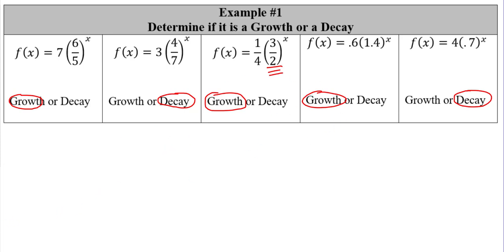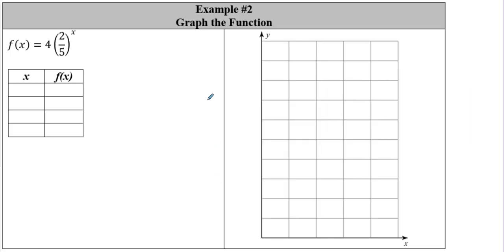Remember, the definition of an exponential function means we have a variable as our exponent, so all of these are actual exponential functions. Now let's try filling out a table and graphing the function. This is a good time to use a graphing calculator. If you don't have one at home, our graph is only in quadrant one, so a good starting point for x is 0, then 1, 2, and 3.